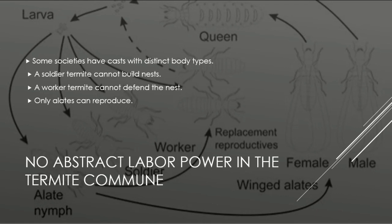In How the World Works, I use a similar illustration to point out that in termite communes there's no abstract labour. Among insect societies there are multiple body forms — a soldier termite can't build nests, a worker termite can't defend a nest, and only alates can reproduce. So there's a division of labour, but it's a division brought about by physical difference between individuals of the species. In this sense, there isn't really abstract labour power in a termite commune.